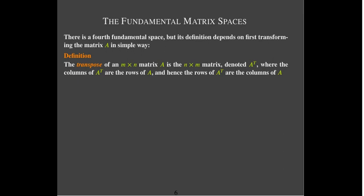I think it's easiest if we just look at an example. Here's a matrix A — it has three rows and two columns. A transpose is going to have two rows and three columns. The first row of A transpose was the first column of A. The second row is the second column. Or you could look at it as the first row of A becomes the first column of A transpose, and the second row becomes the second column of A transpose.